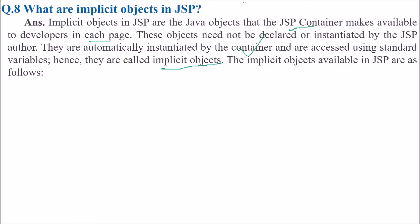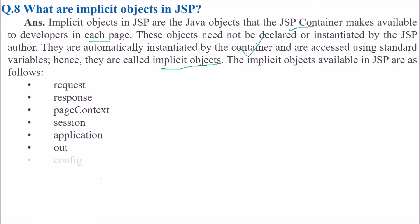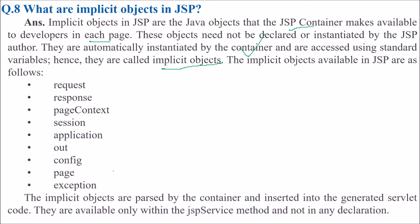The implicit objects available in JSP are: request, response, page context, session, application, out, config, page, and exception. These implicit objects are passed by the container and inserted into the generated servlet code. They are available only within the JSP service method and not in any other declaration.